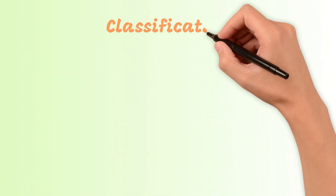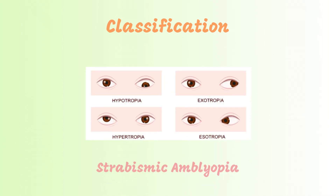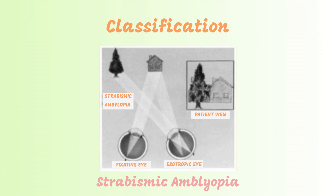Classification of amblyopia based on causes. Strabismic amblyopia: unilateral amblyopia is associated with strabismus in 19% to 50% of cases. A squint in the left eye leads to confusion resulting from the superimposition of two different images, thus resulting in the visual cortex becoming dominated by input from the fixating eye with reduced responsiveness to input from the squinting eye.